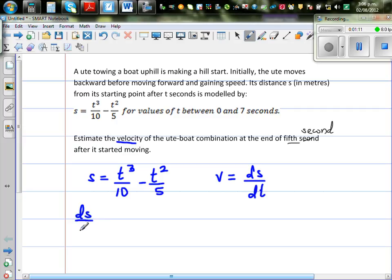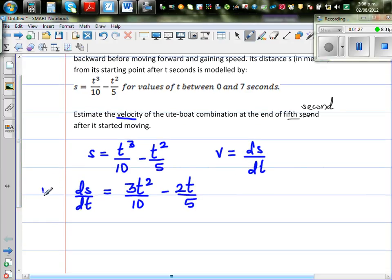So ds/dt would be—for a derivative you drop the power down—3t²/10 minus 2t/5, just like that. So your velocity is ds/dt which is 3t²/10 - 2t/5.